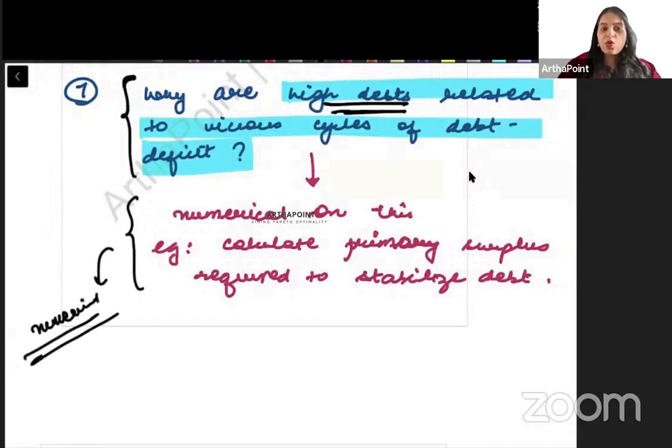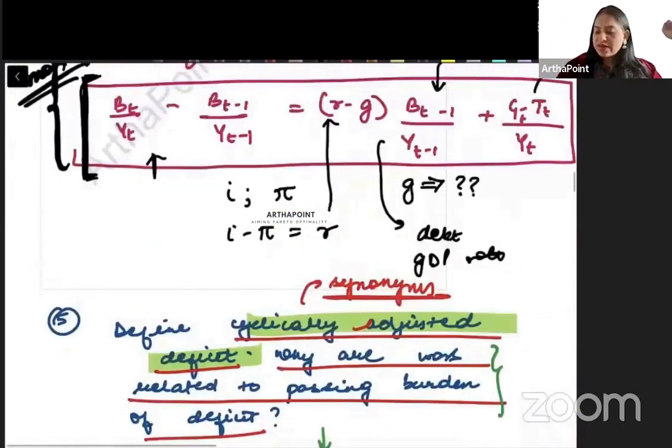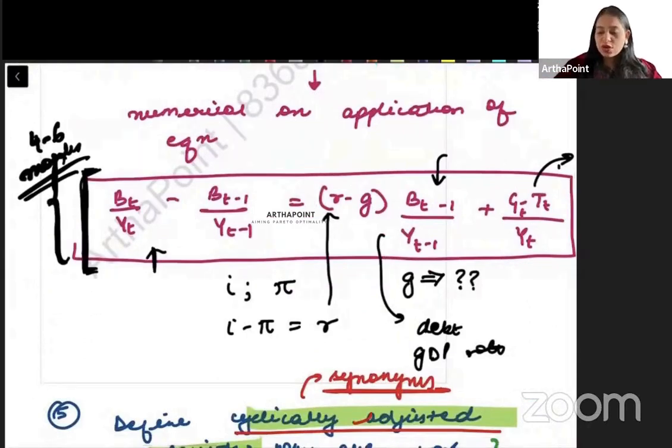Again on this there can be a numerical that can be asked. Right? So they can go ahead and they can ask you that if the government is taking this much debt last year. How much deficit would it cause this year and so on and so forth. Ya how much surplus is required to stabilize the debt.